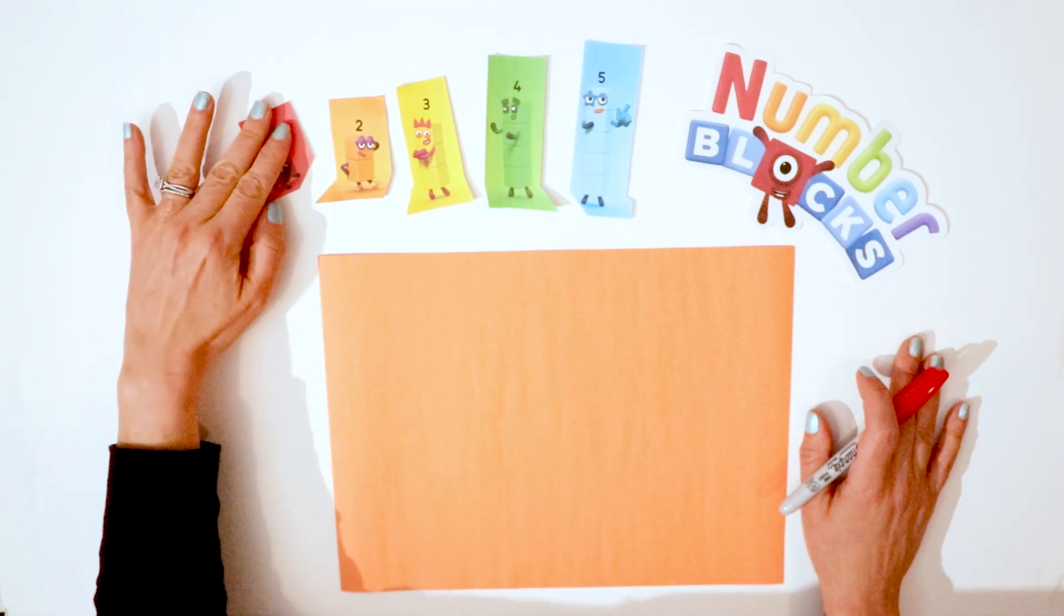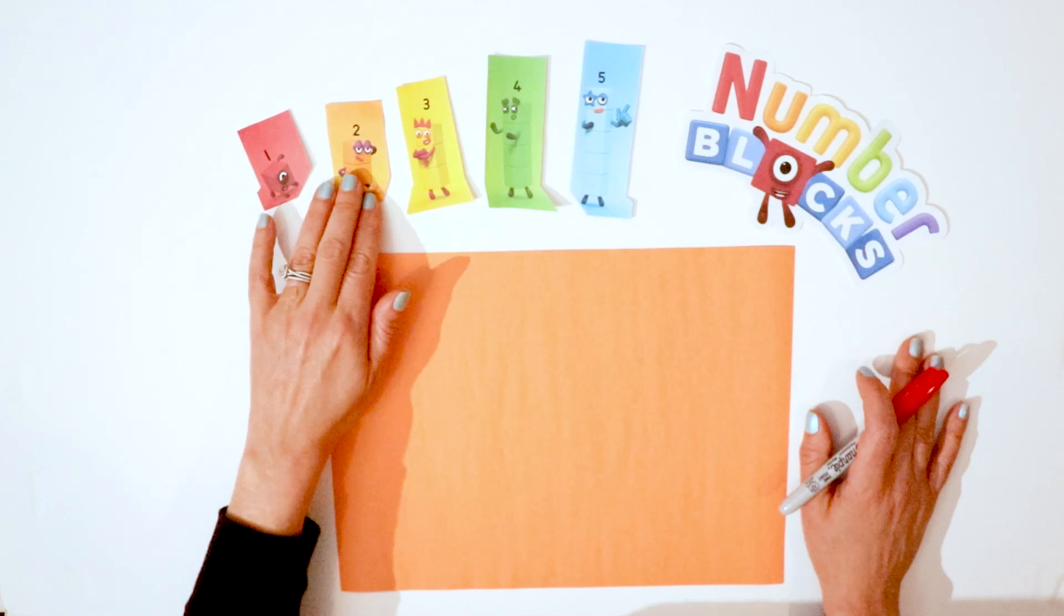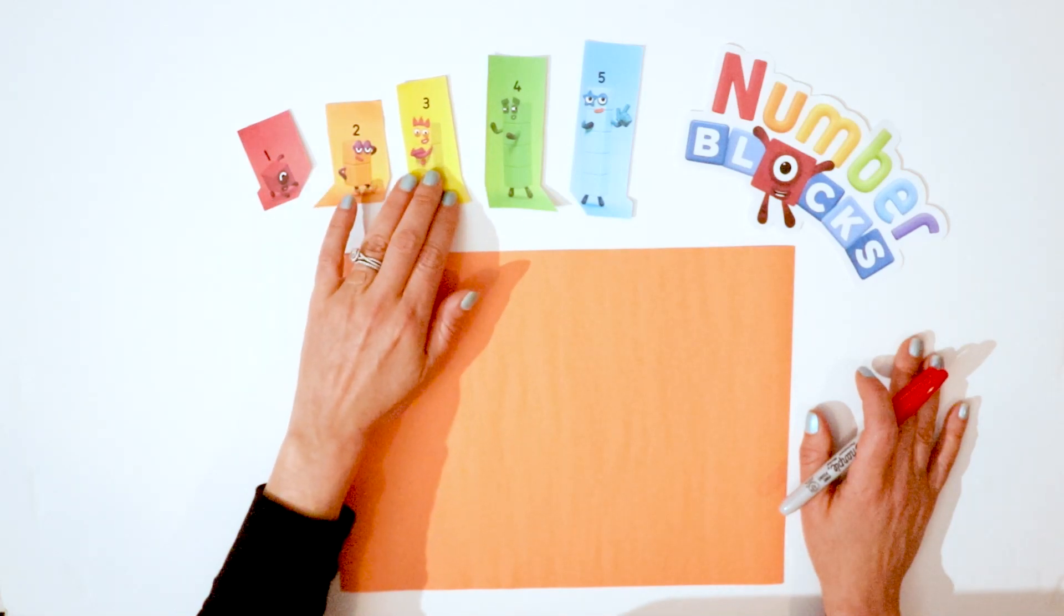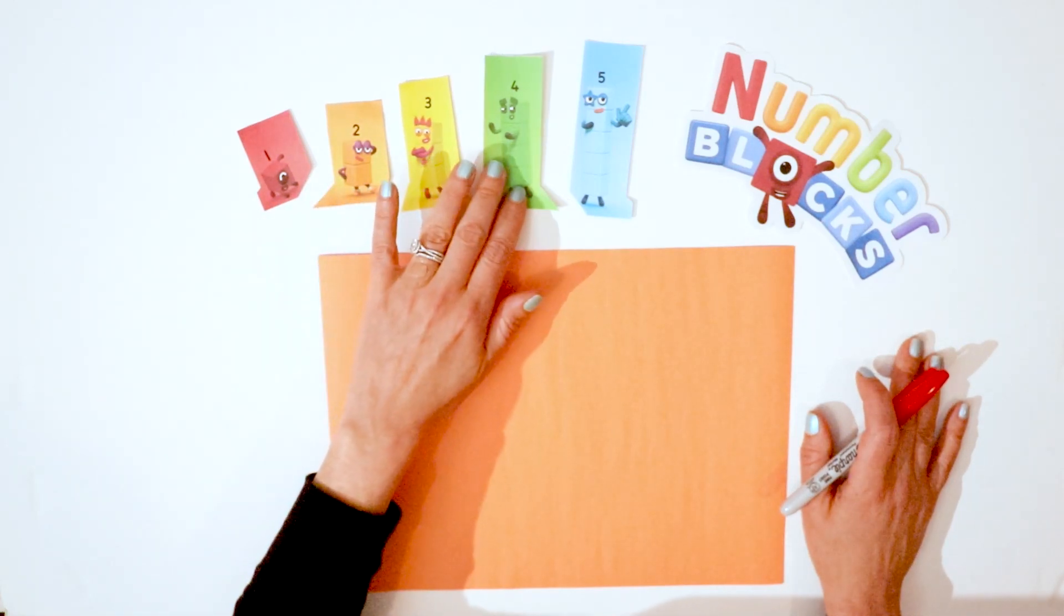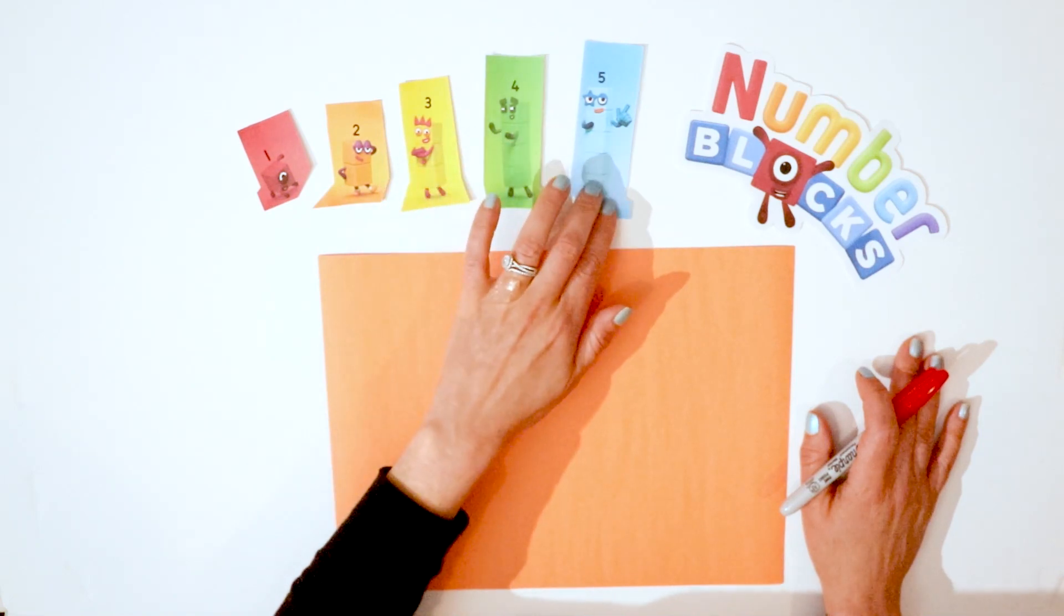Number one is red, number two is orange, number three is yellow, number four is green, and number five is blue.